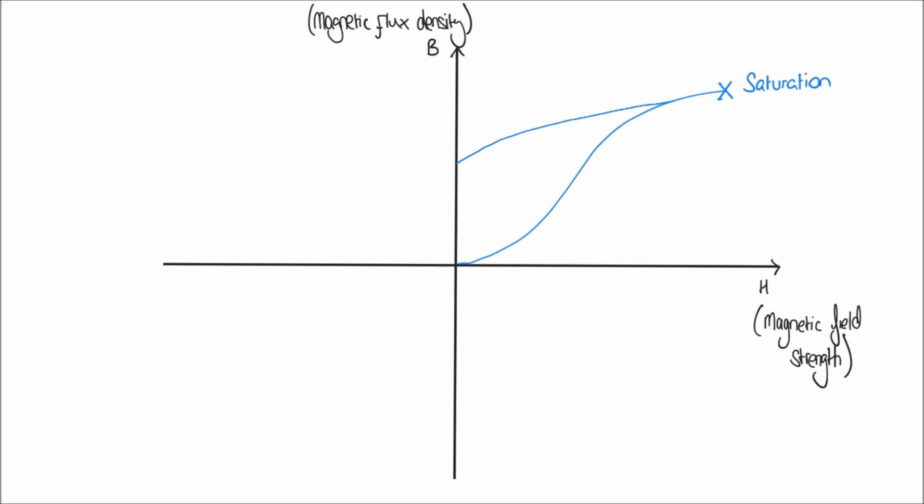So initially we went up in this direction, we increased H, and then we've decreased H again. And we reached this point here, which is called the retentivity. In essence, the paper clips in this case have retained some of their magnetism.